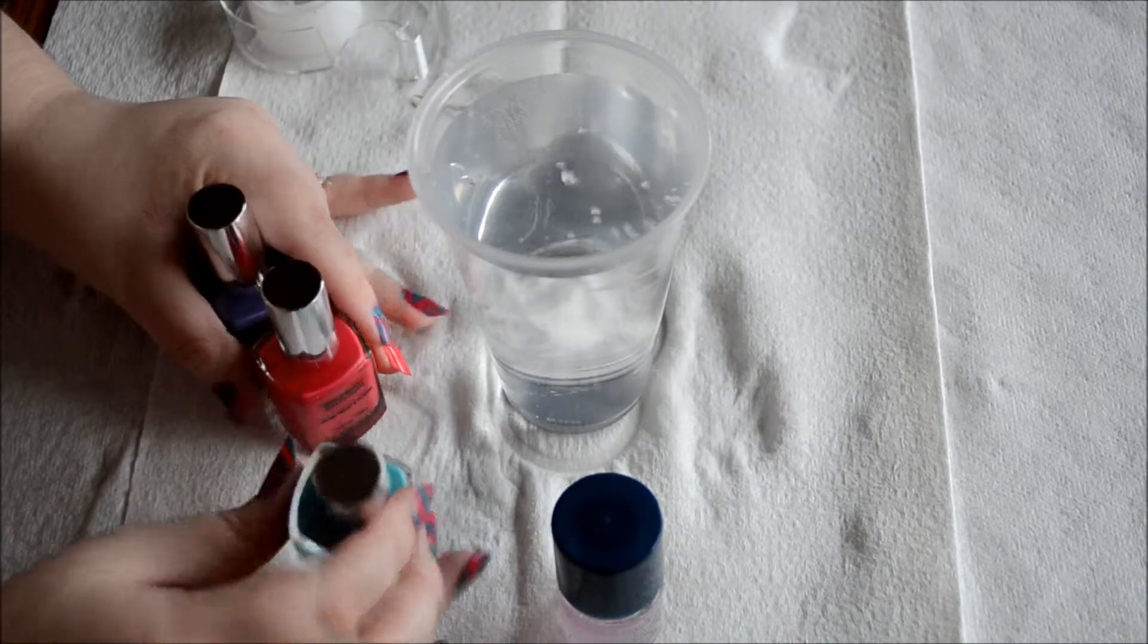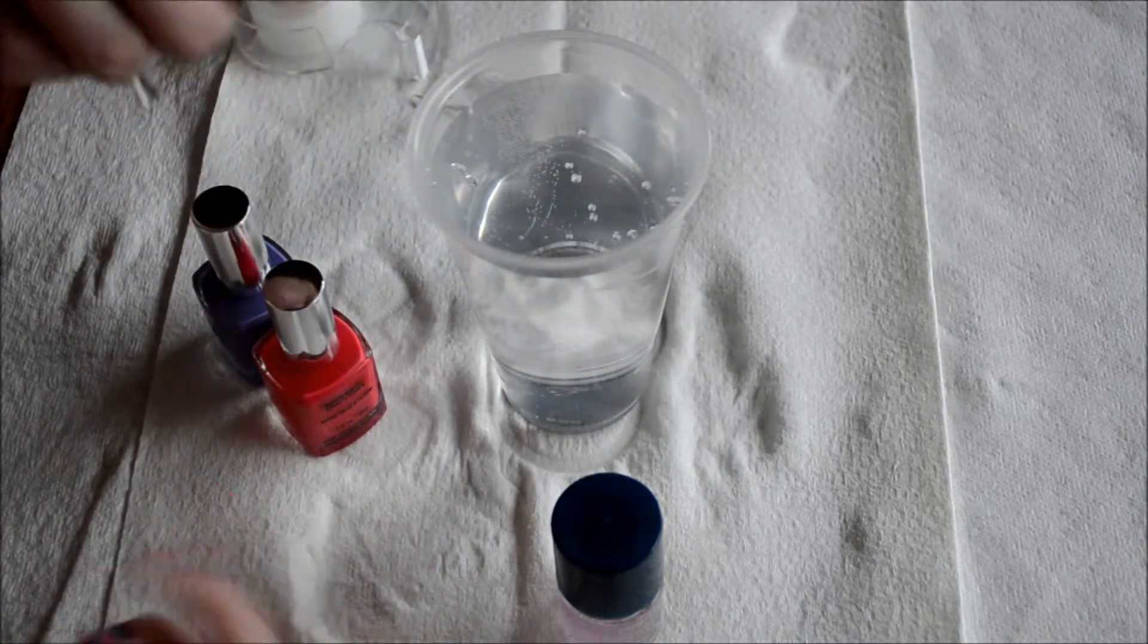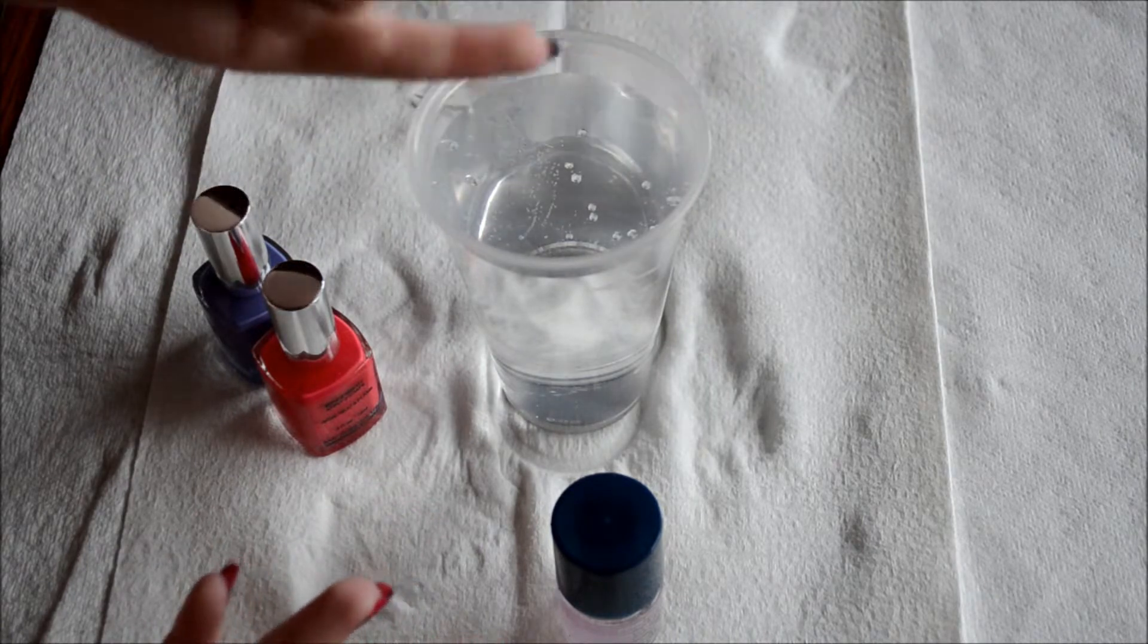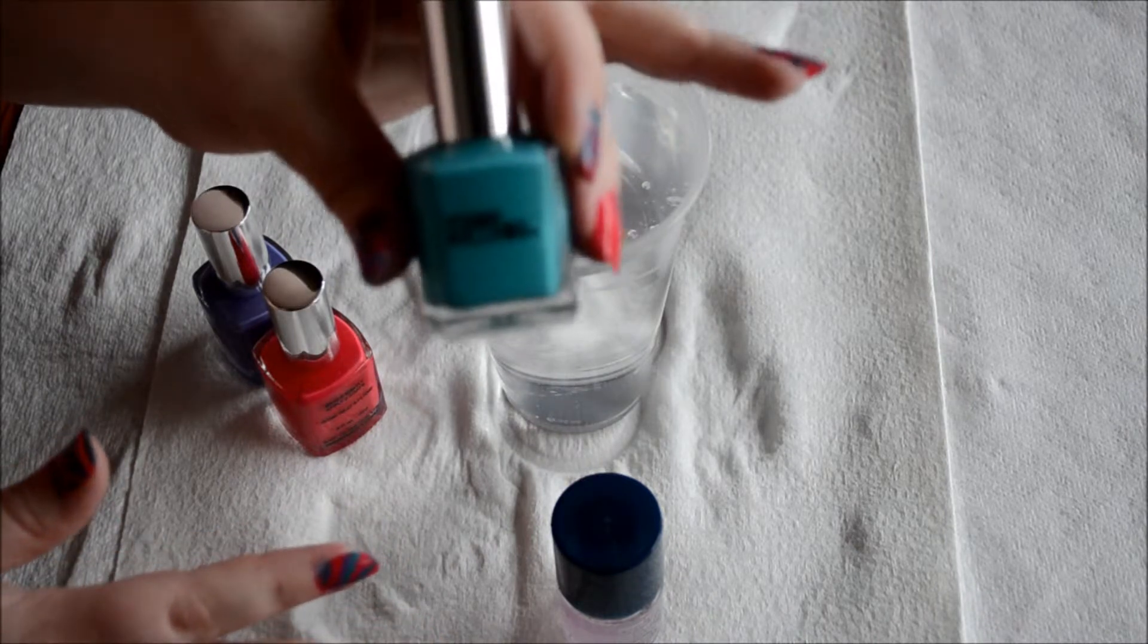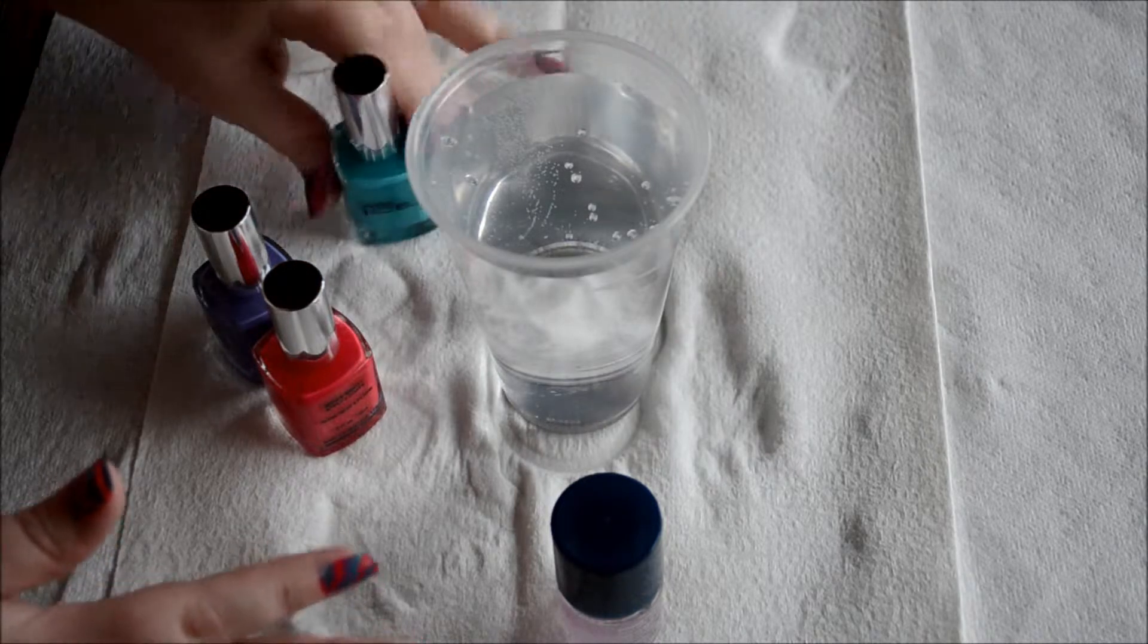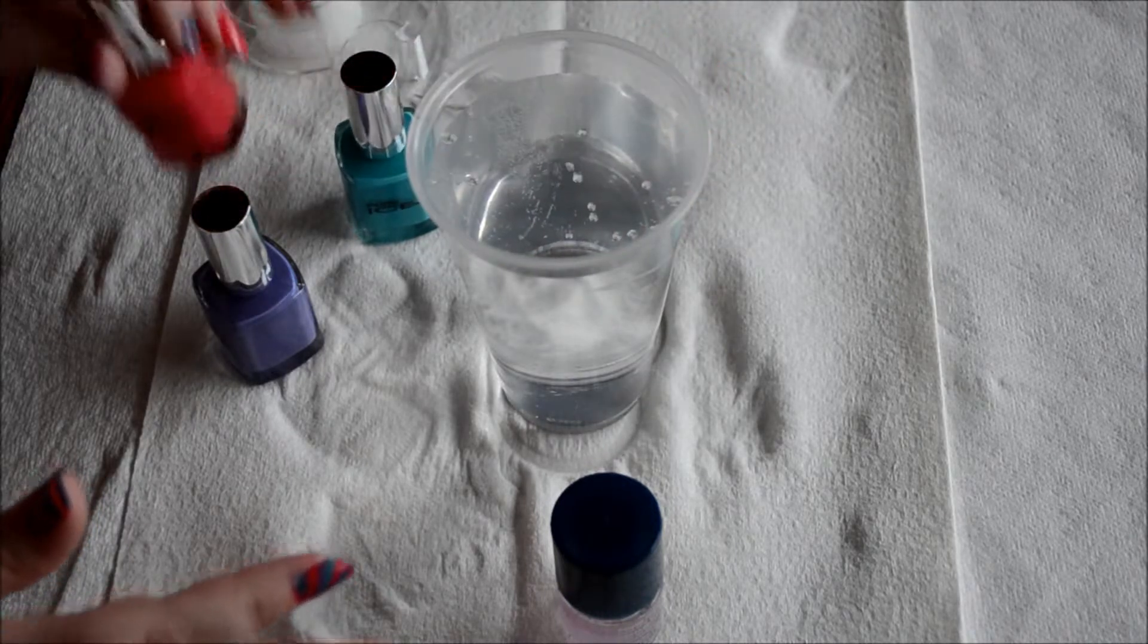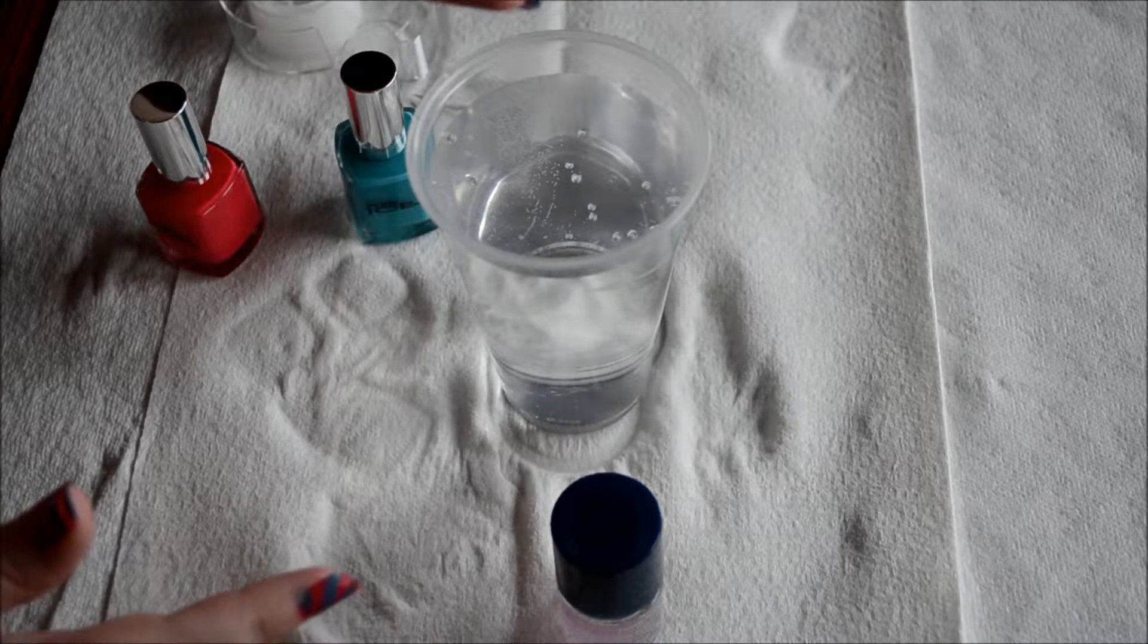So I'm going to go over the colors that I have. Of course I'm using Pure Ice, which is one of the cheapest nail polishes you can find and I actually really love them. And they're perfect for water marbling. So I'm using Pure Ice and the turquoise color I'm using is called Scream. And the pink color that I'm using is called After Hours. And the purple I'm using is called Jailbait.